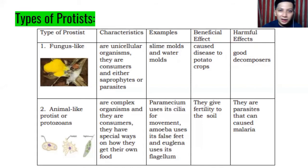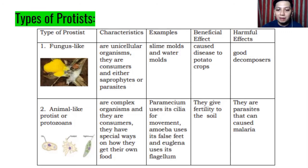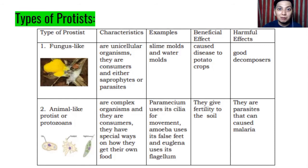Animal-like protists, or protozoans, are complex organisms and consumers. They have special ways of getting food, like amoeba. Paramecium uses its cilia for movement — tiny hair-like structures. Amoeba uses its false feet, moving by extending part of its cell from one place to another. Euglena uses its flagellum — the long tail-like structure also found on sperm cells. Their beneficial effect is that they give fertility to the soil, while their harmful effect is that they are parasites that can cause malaria, amoebiasis, and other diseases.